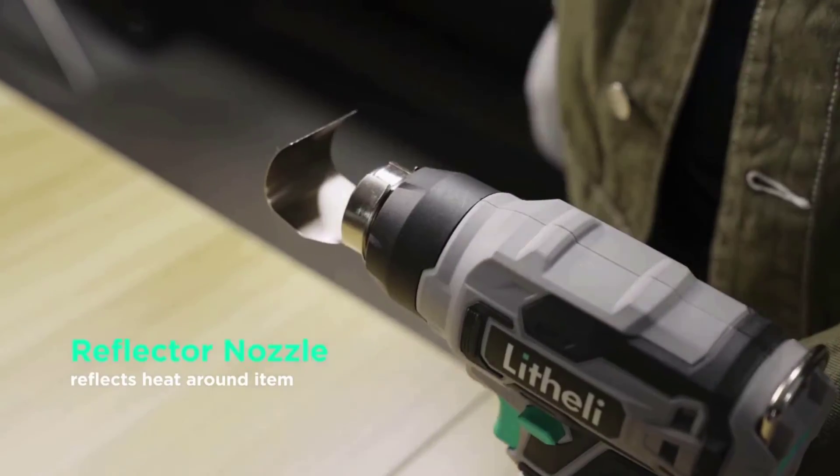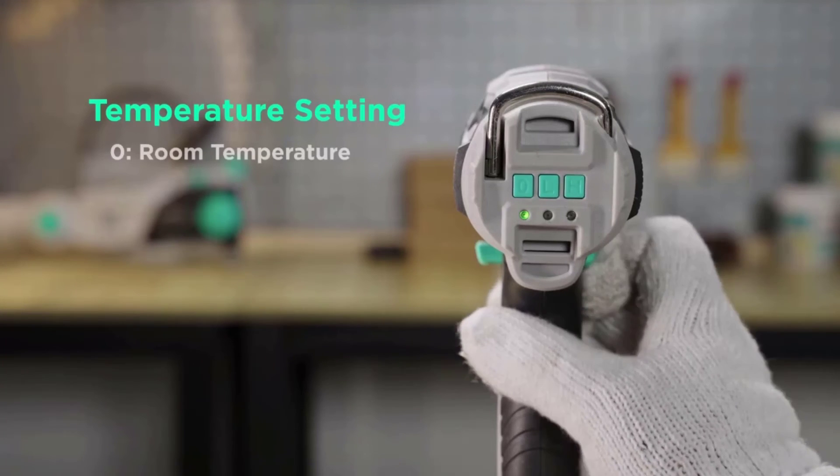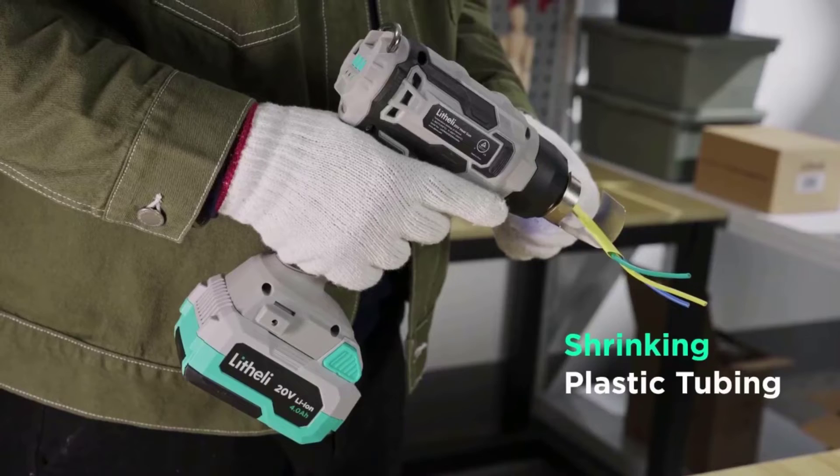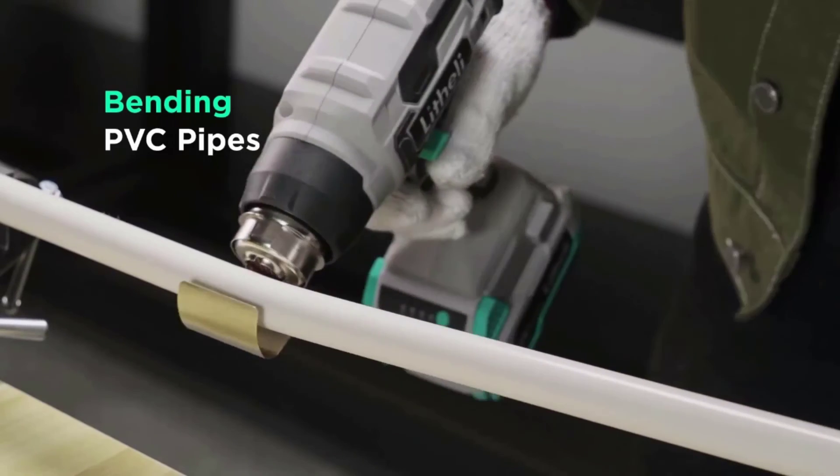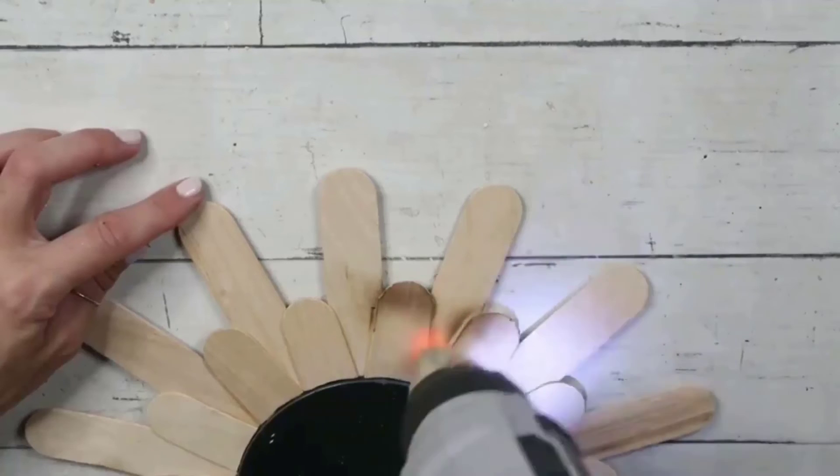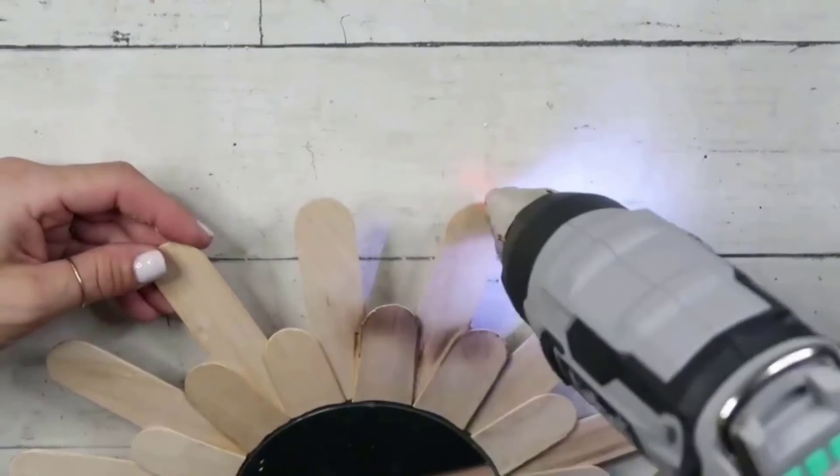Safety and convenience. To ensure your safety, never aim the airflow at directions other than that of the working item. The tool features overheat protection to better control the temperature, and there is a lock-off button to prevent accidental start. Plus, the hook at the top back makes it easy to transport and store.